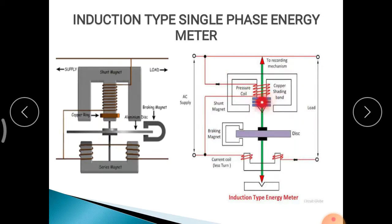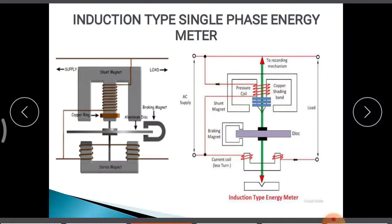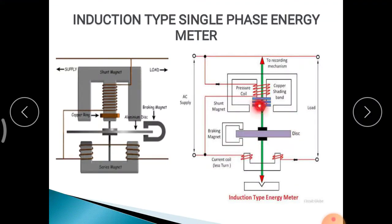A copper shading band is provided on the central limb. This is because a very important condition in the driving system is that the current in the potential coil must compulsorily lag behind the applied voltage by 90 degrees. To achieve this condition properly, the copper shading band is used.